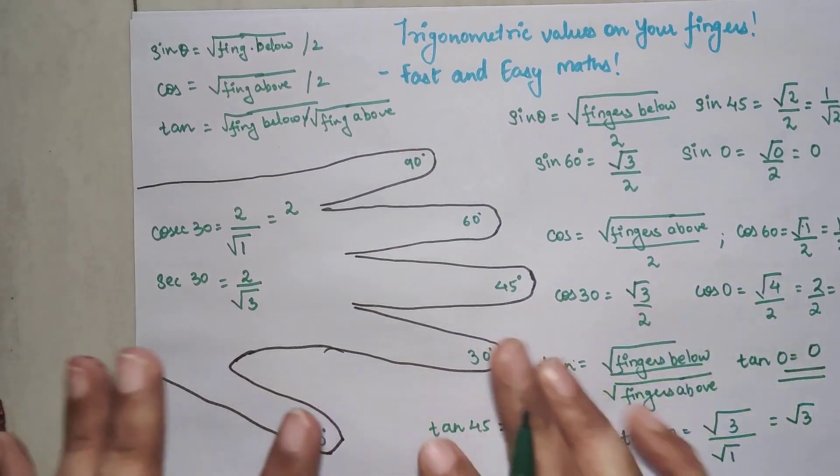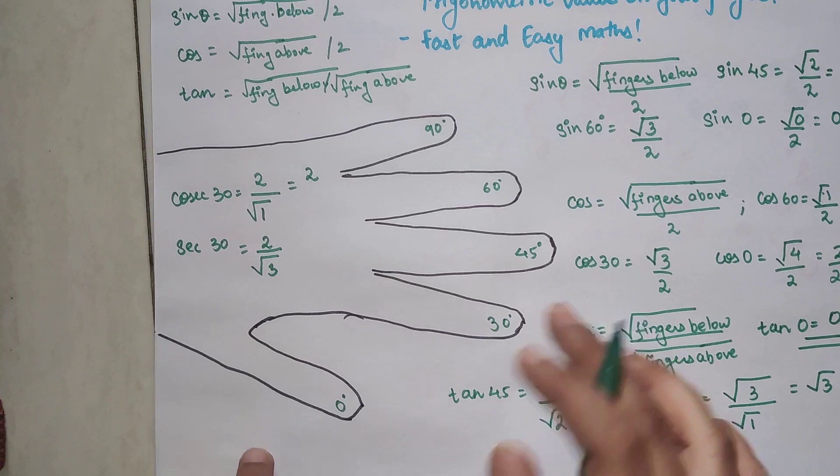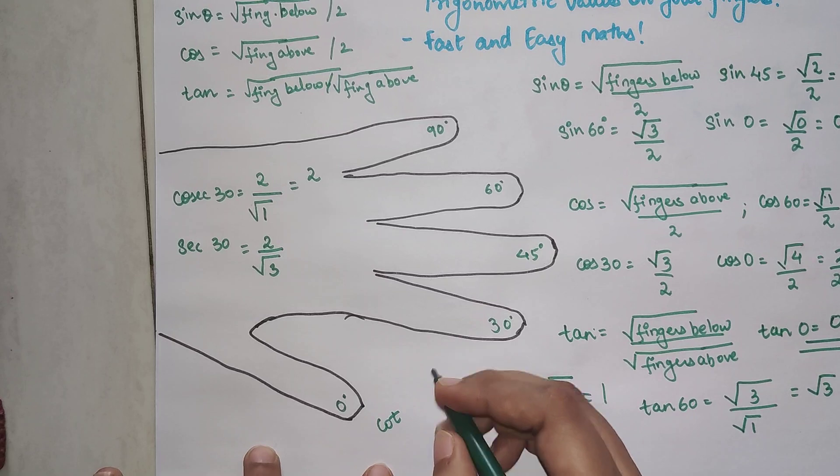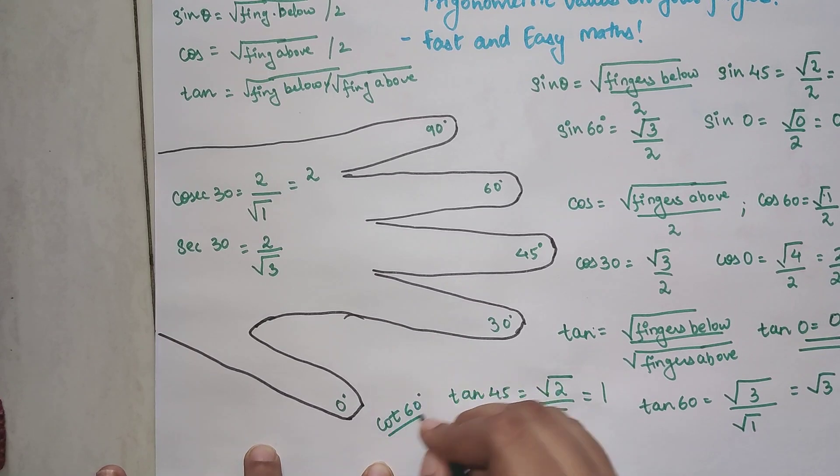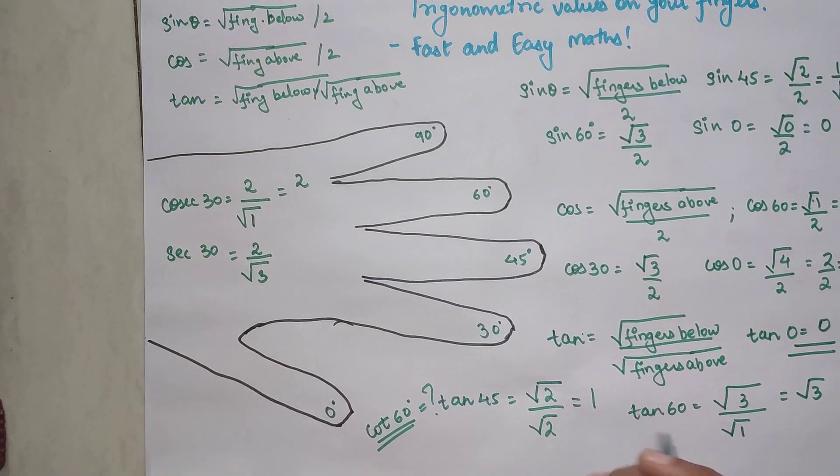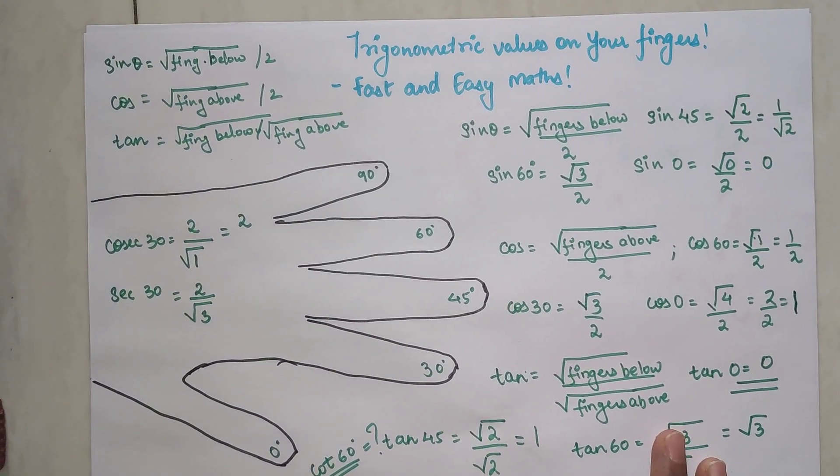So I hope you have seen how easy this thing became. So now using this logic I want you to tell me what is the value of cot 60. Do let me know your answers in the comment section. So that is it for today. I will see you in the next video.